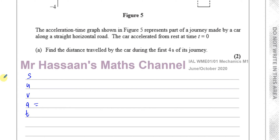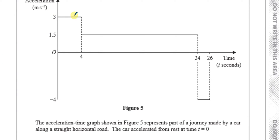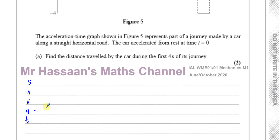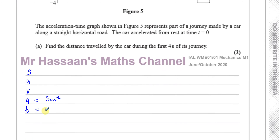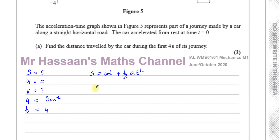The acceleration is constant in the first 4 seconds, and the acceleration has a value of 3 metres per second squared. The time is 4 seconds. The initial speed was 0. We don't know the final speed right now, and we need to find the distance. We can work this out with just this information using S equals ut plus one-half at squared.